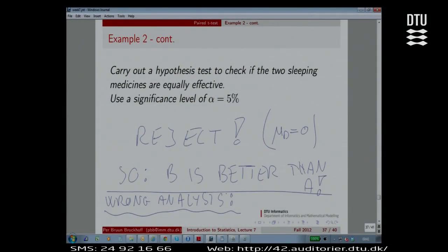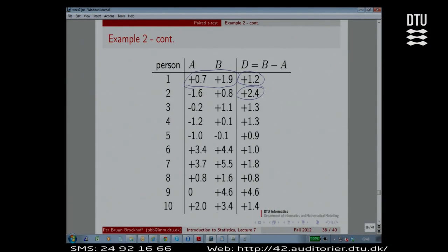The thing is, there is an individual effect that has nothing to do with whether it's sleeping medicine A or B. Some persons, like this one and like this one, persons 6, 7 and 10, generally have good effects of sleeping medicine, whether it's A or B, it doesn't matter. There is individual variability that is large, that goes across the two treatments. So these are persons that receive those type of treatments well. Other persons receive such treatments, generally speaking, less well. So there is an individual, a biological variability, or genetic variability, in how people receive those medicines.